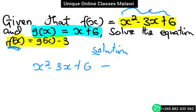We have x squared minus 3x plus 6, then the function g of x is equal to x plus 6, minus 3.